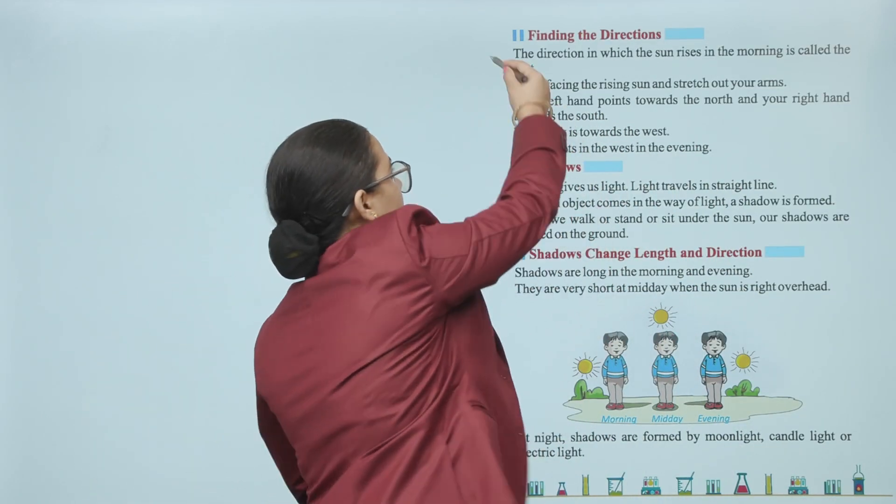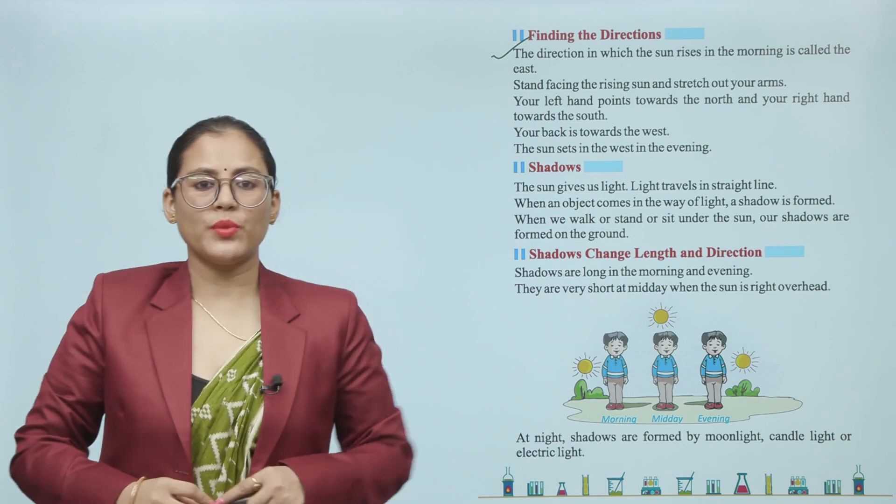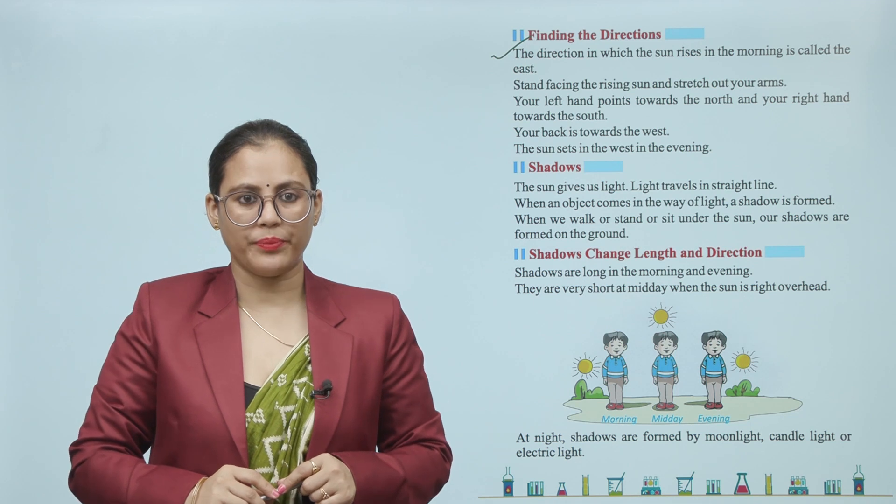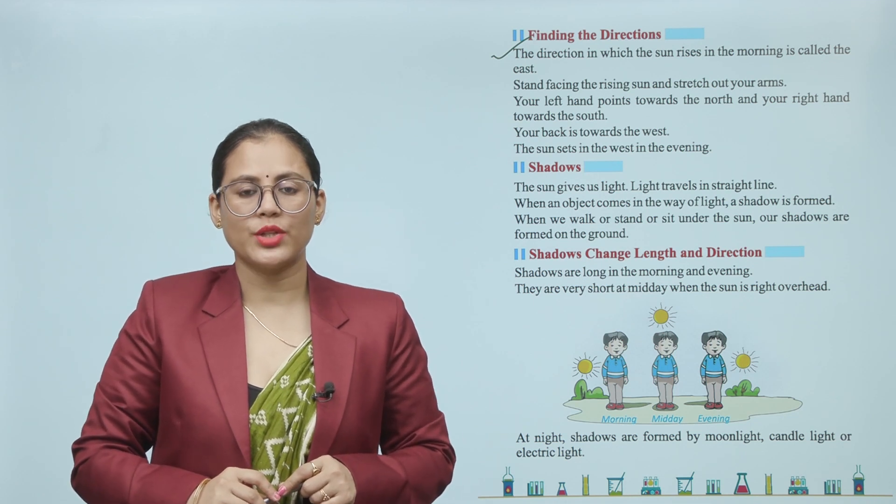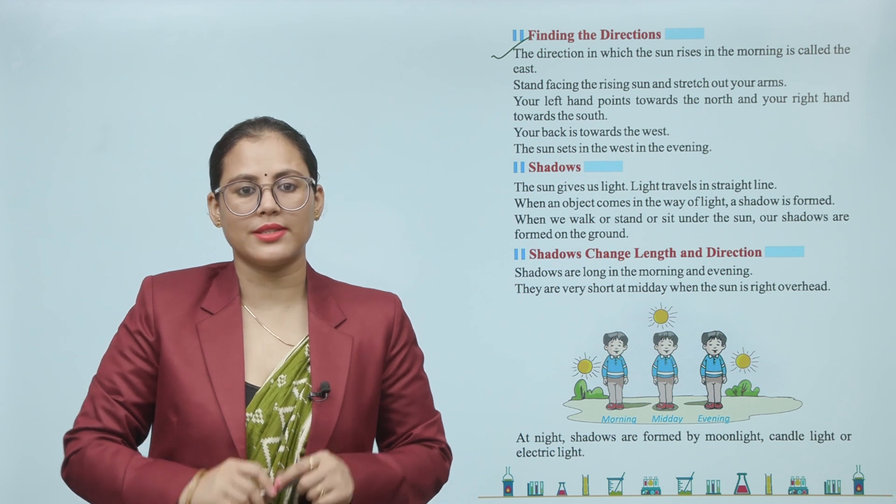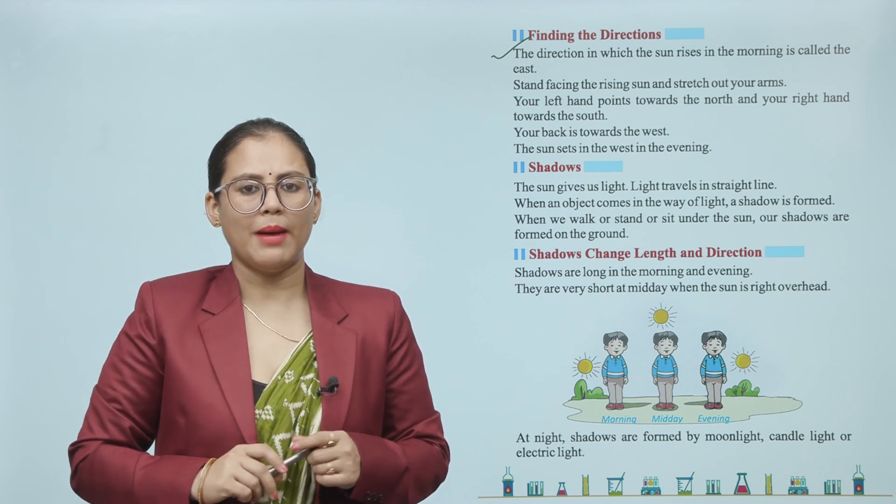Finding the directions: The direction in which the Sun rises in the morning is called the East. Stand facing the rising Sun and stretch out your arms. Your left hand points towards the North and your right hand towards the South. Your back is towards the West.